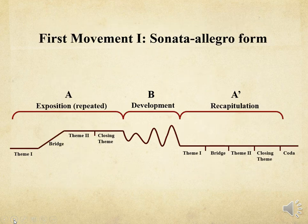In a multi-movement cycle, the first movement is in sonata allegro form. This is an ABA-prime pattern. The A section is the exposition, which is repeated. Then there's a B section that contrasts with that, called the development. And then the A-prime is the recapitulation, where it repeats the A section but with a little bit of a change at the end and differences in keys.